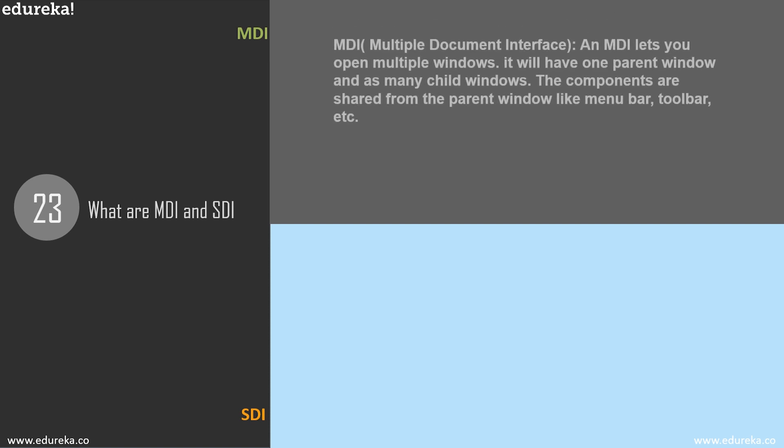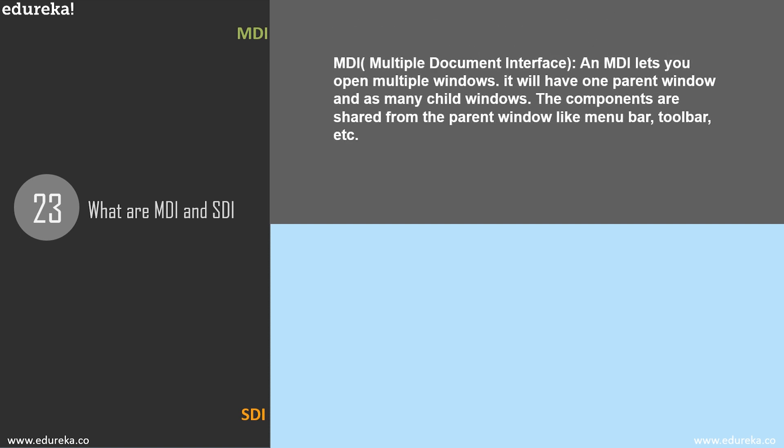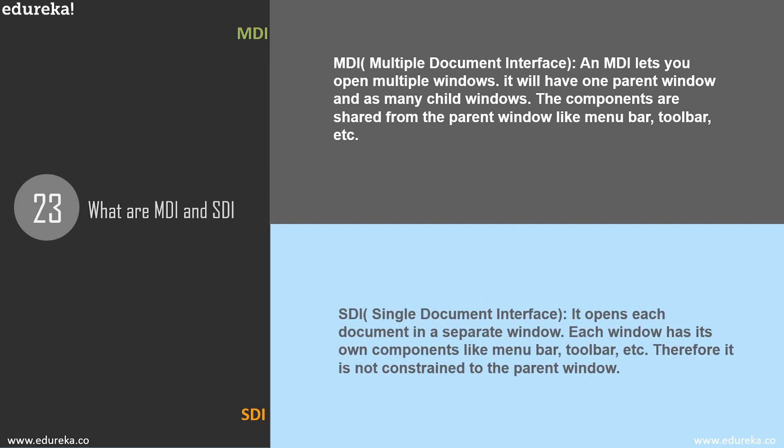Question 23: what are MDI and SDI? MDI is Multiple Document Interface and SDI is Single Document Interface. MDI lets you open multiple windows, with one parent window and as many child windows as needed — components like menu bar and toolbar are shared from the parent. SDI opens each document in a separate window, with each window having its own components like menu bar and toolbar, and is not constrained to a parent window.